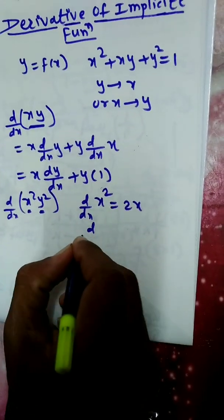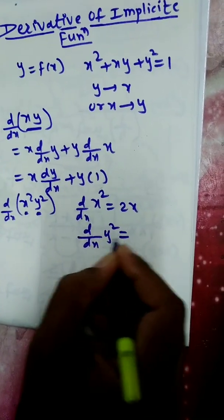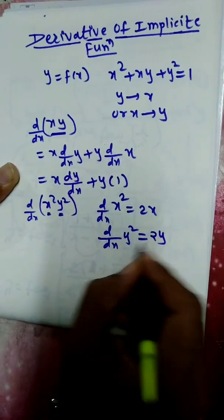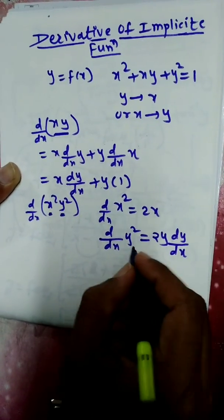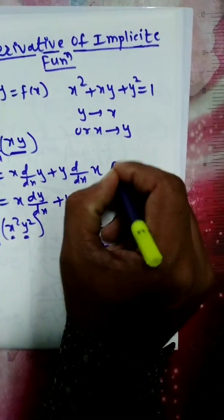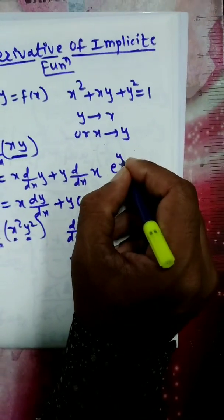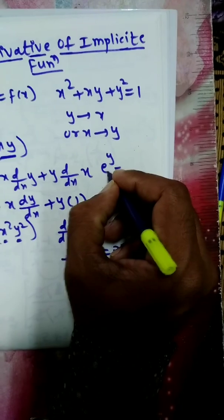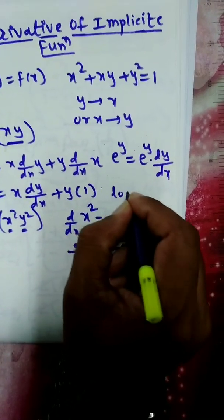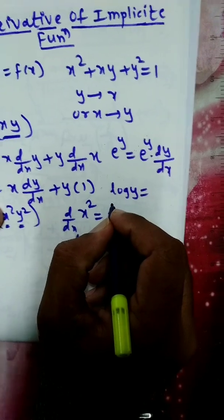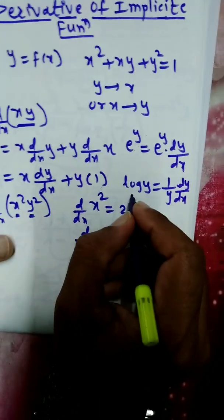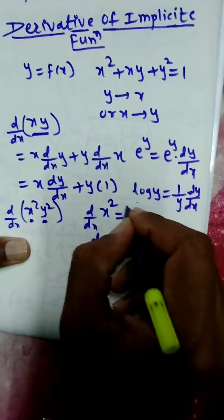The derivative of x² is 2x. In the same way, the derivative of y² with respect to x is 2y but multiplied by dy/dx. Whenever we are dealing with y, we multiply its derivative by dy/dx. For example, e^y differentiates to e^y times dy/dx, and the derivative of log y is (1/y) times dy/dx. Whenever we deal with y, we multiply its derivative by dy/dx.